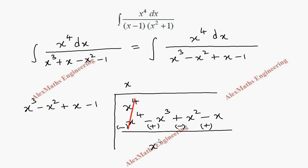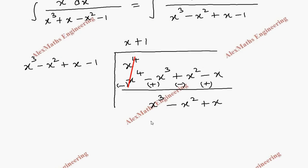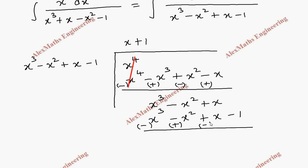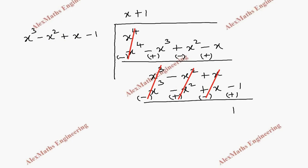Now we need x cubed, so if I multiply 1 with the first term x cubed we get x cubed as the first term. With that 1 we have to multiply the other terms, and finally minus 1. Since we are going to subtract we have to change the sign of all the second terms. Now we cancel x cubed and minus x cubed. Minus x squared plus x squared, plus x minus x — finally the remainder is 1. After doing the long division, this is the quotient, this is the remainder, and this is the divisor.